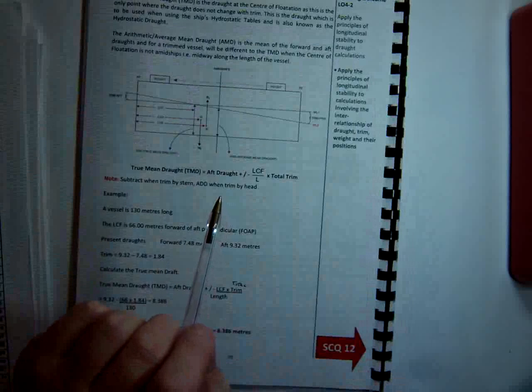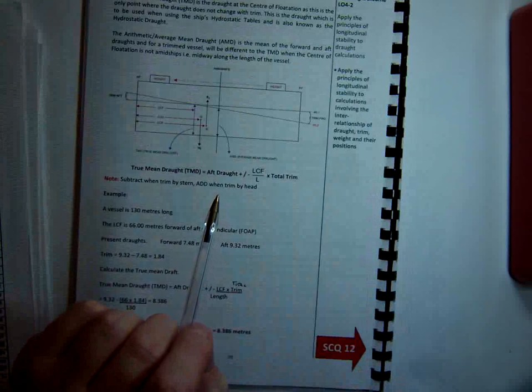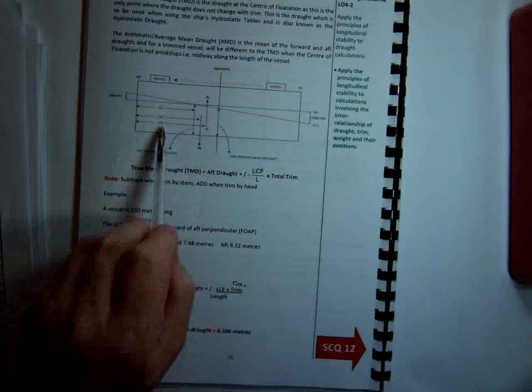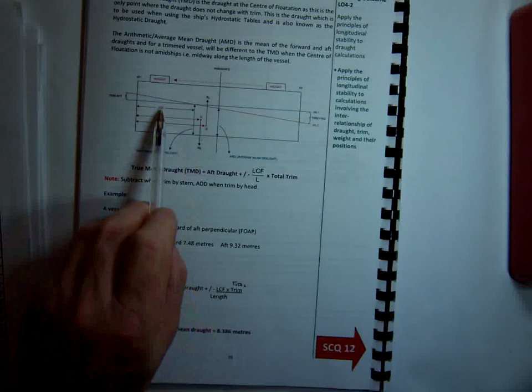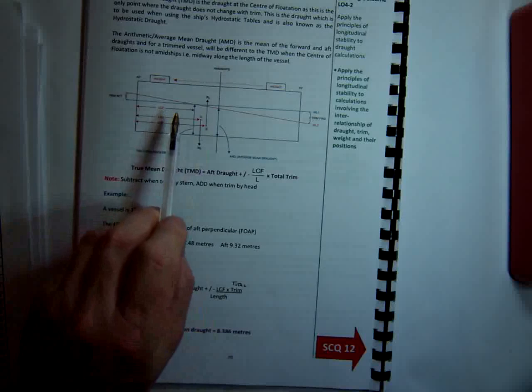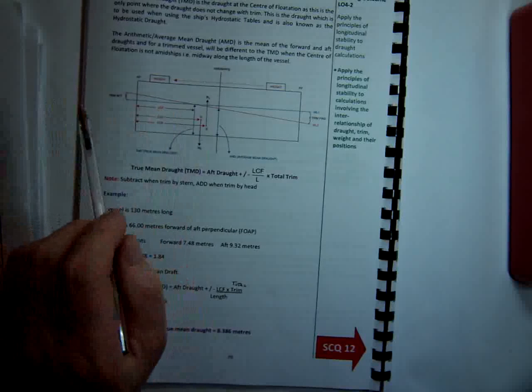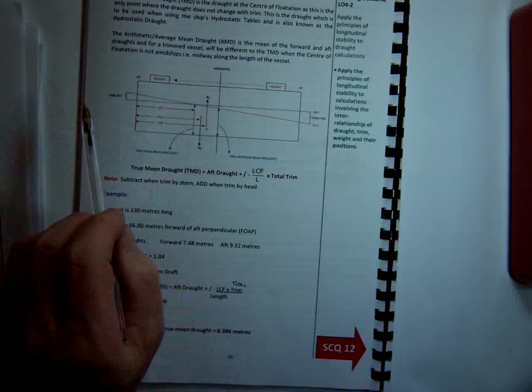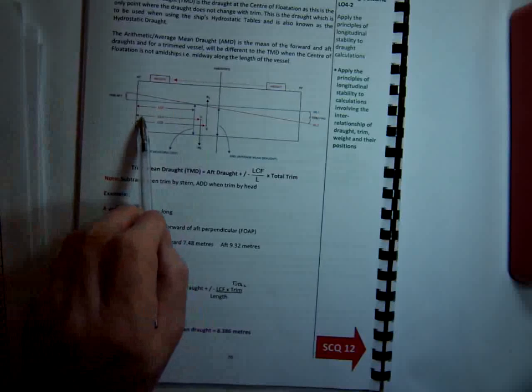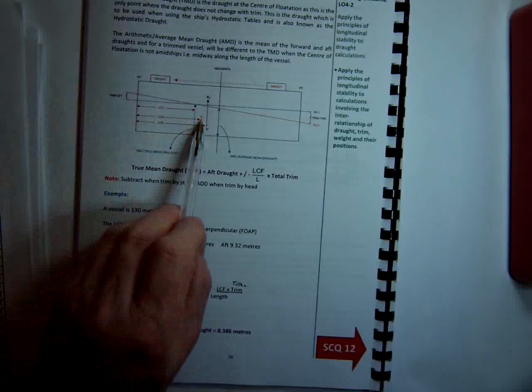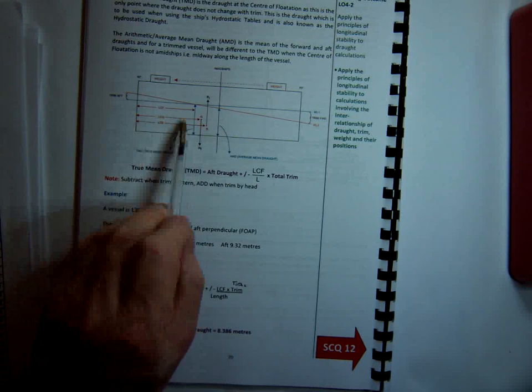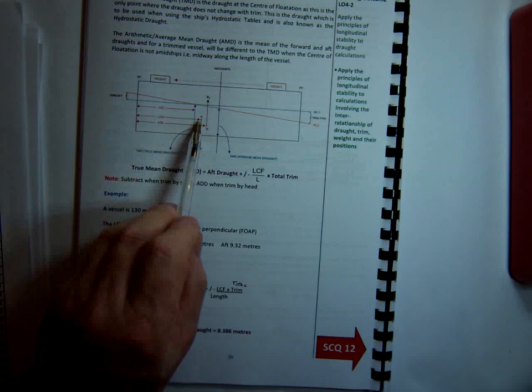There is one other value that we need to solve the problem. Now we've got our centre of buoyancy from the tables, we've got our centre of floatation from the tables, we've got our MCTC, and we've got our draft, true mean draft. The last value we need is our longitudinal centre of gravity, LCG, longitudinal centre of gravity.